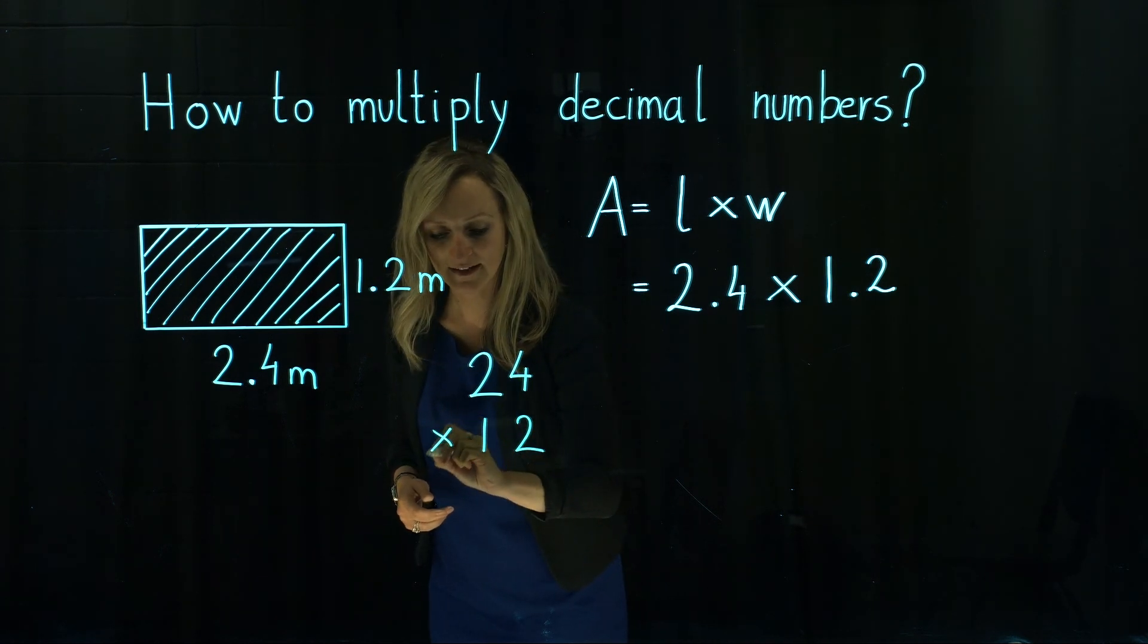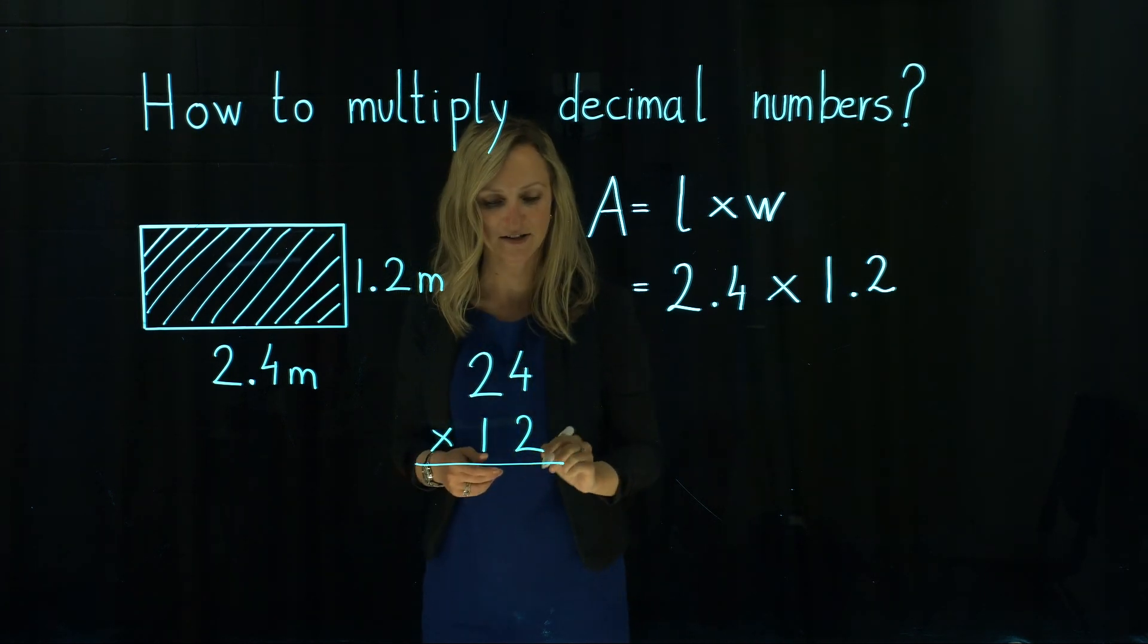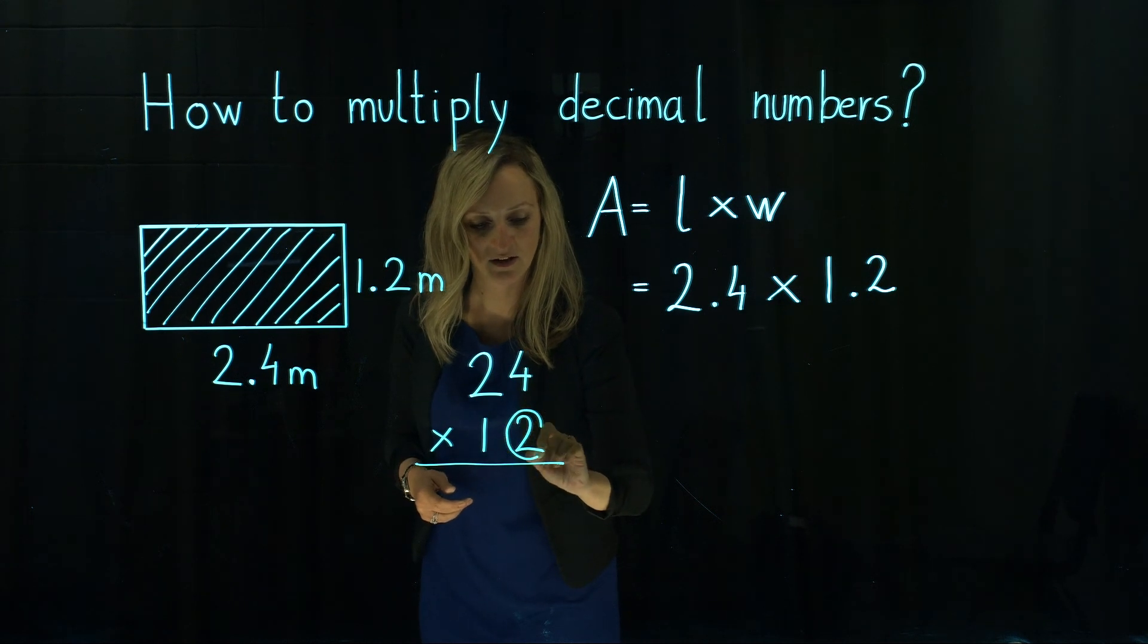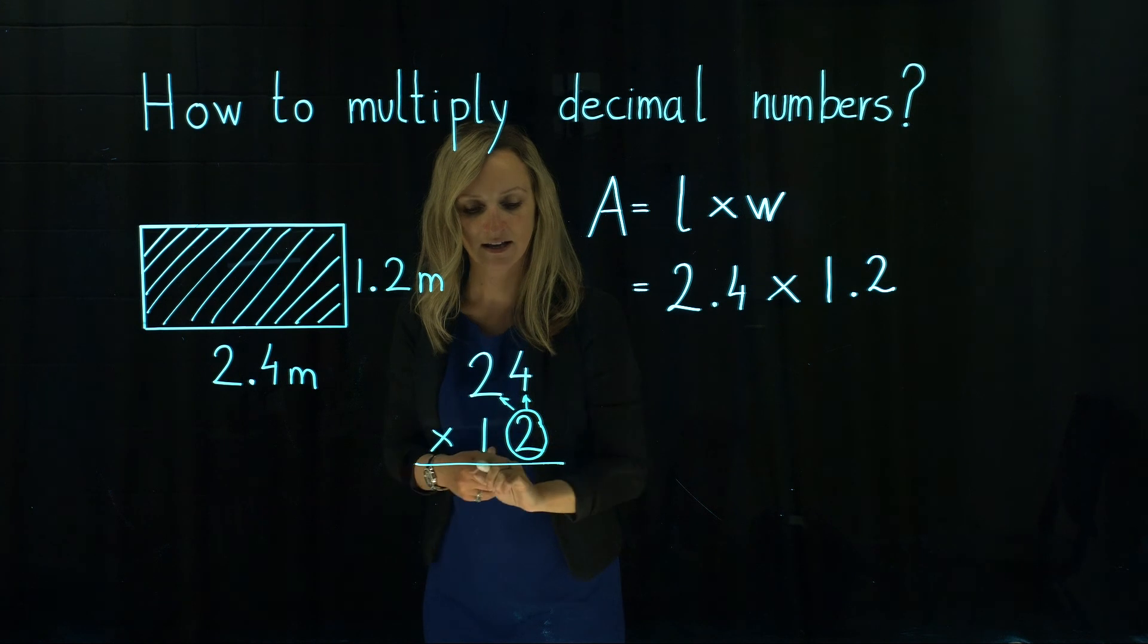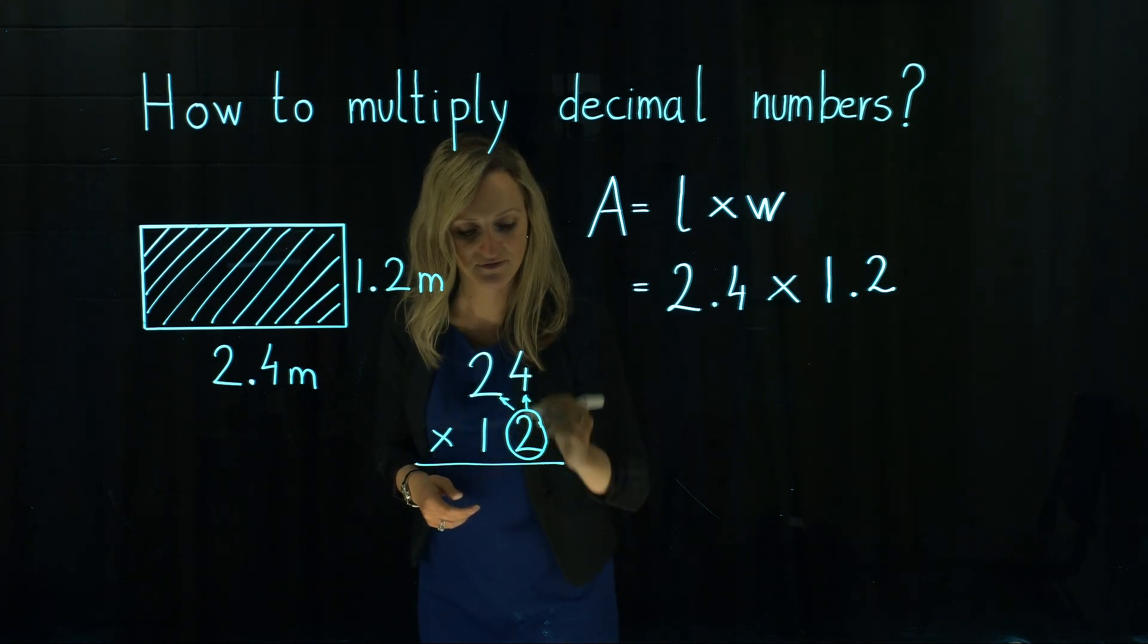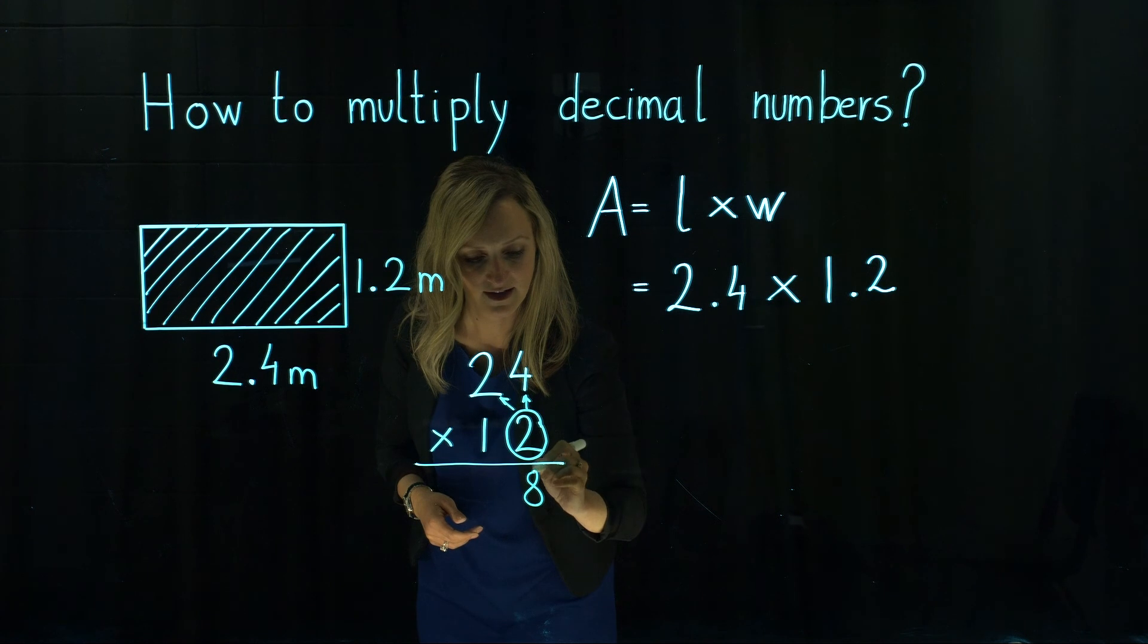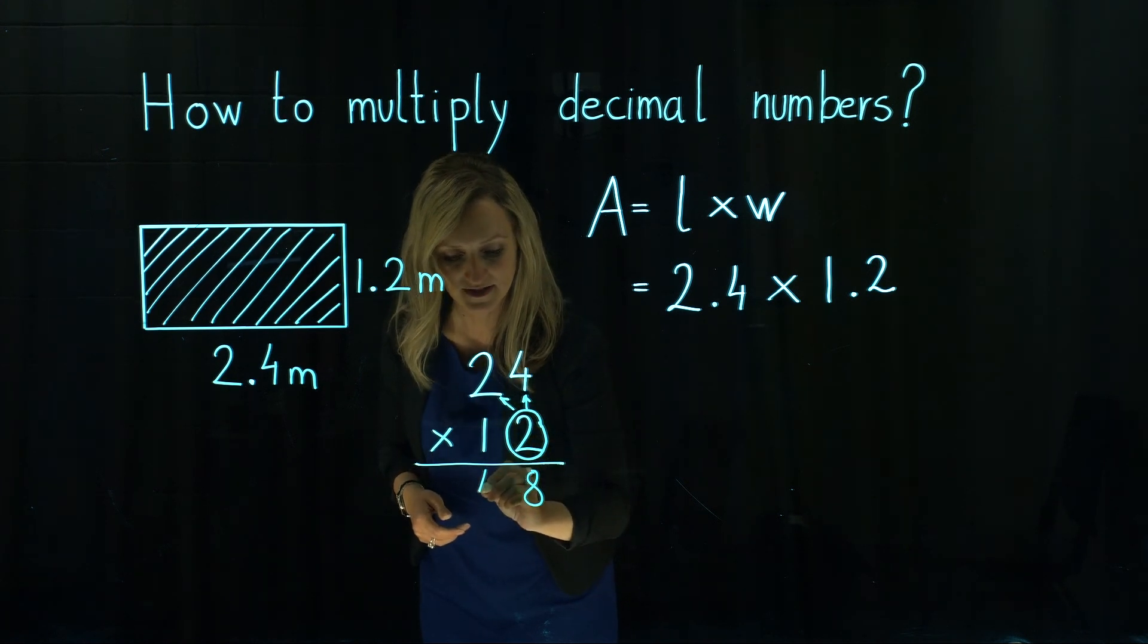Then we multiply them as whole numbers. We start with the place value of 1 and this one should be multiplied by each number in the first top number. 2 times 4 gives us 8. 2 times 2 gives us 4.